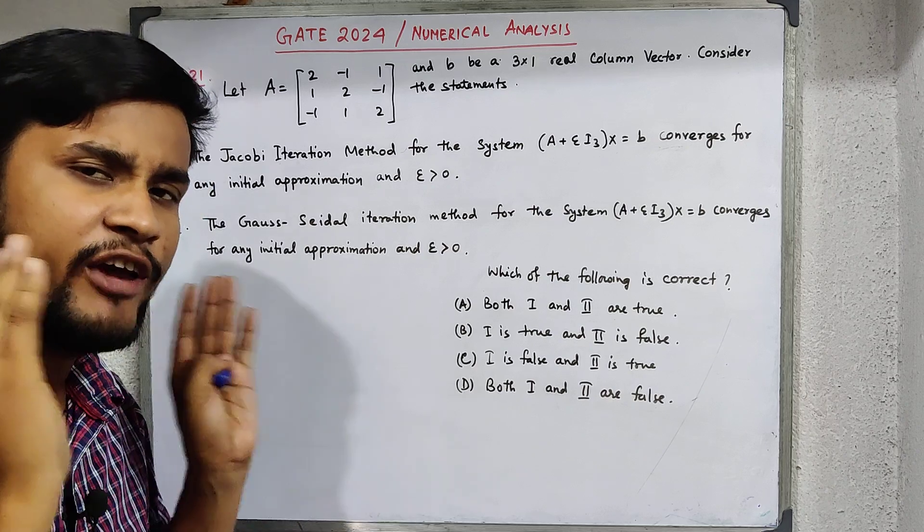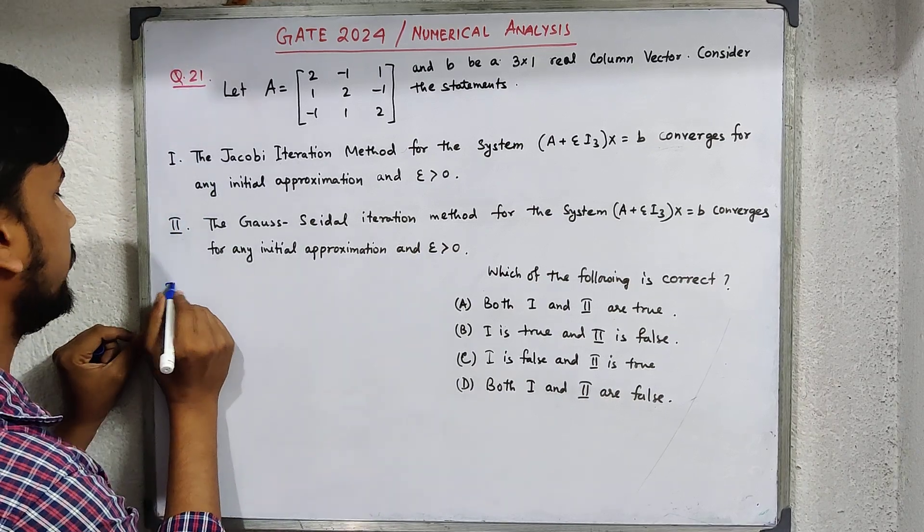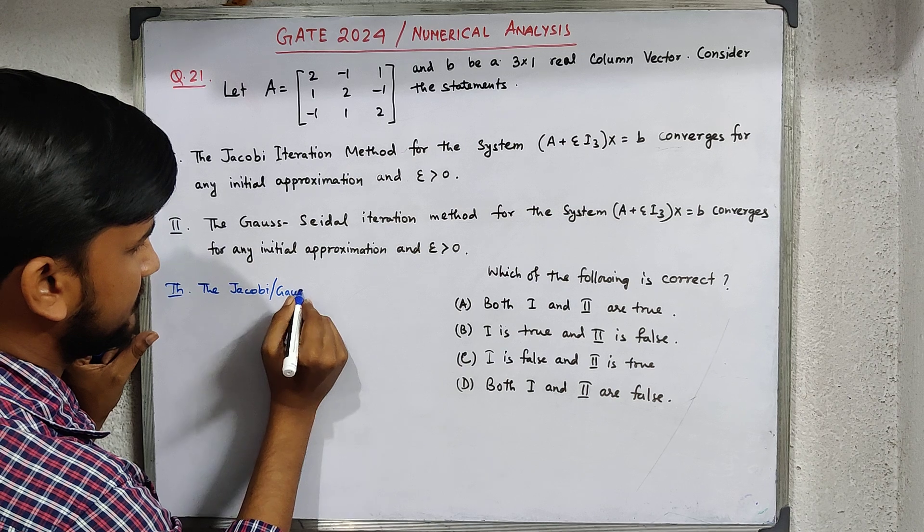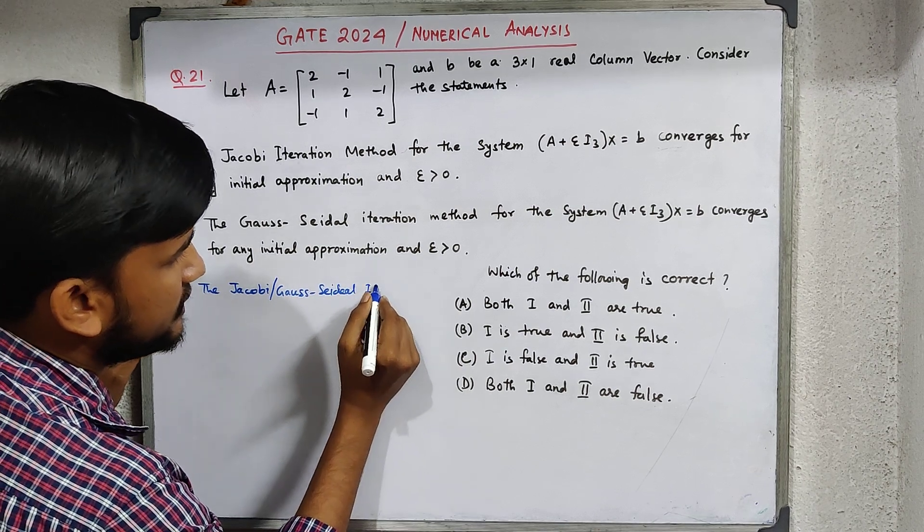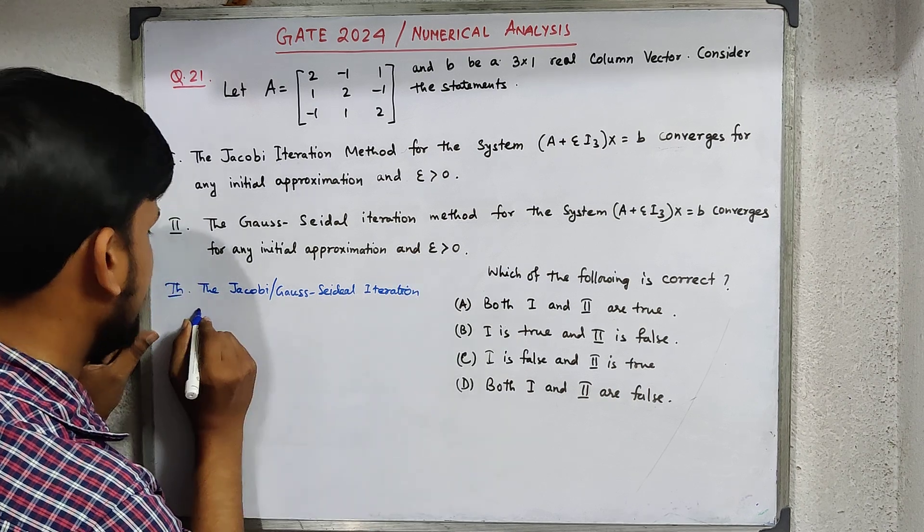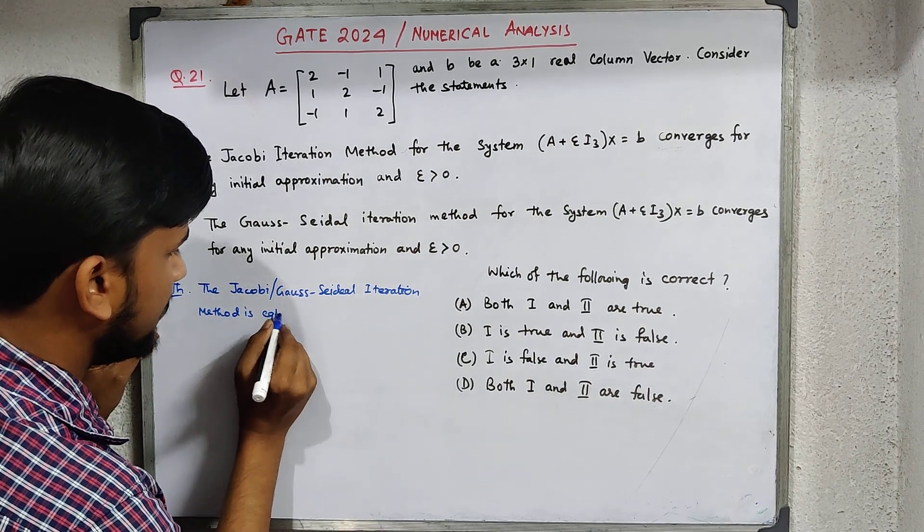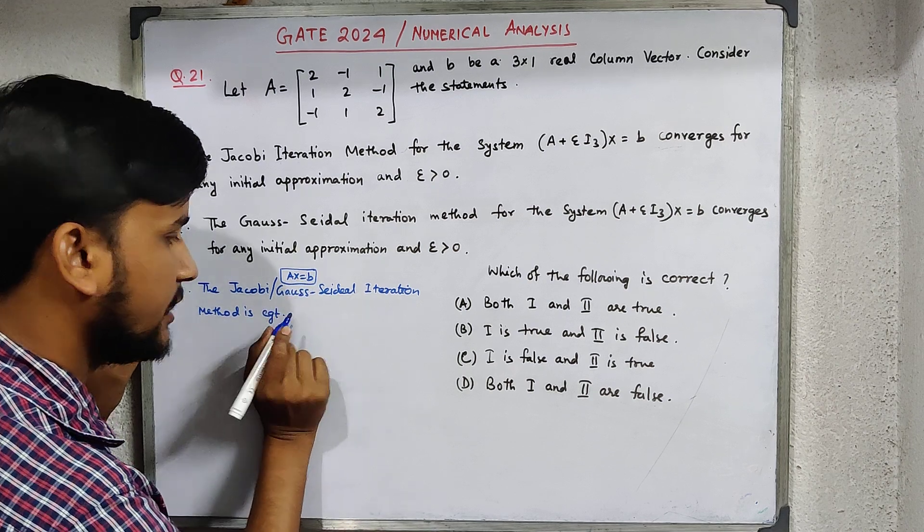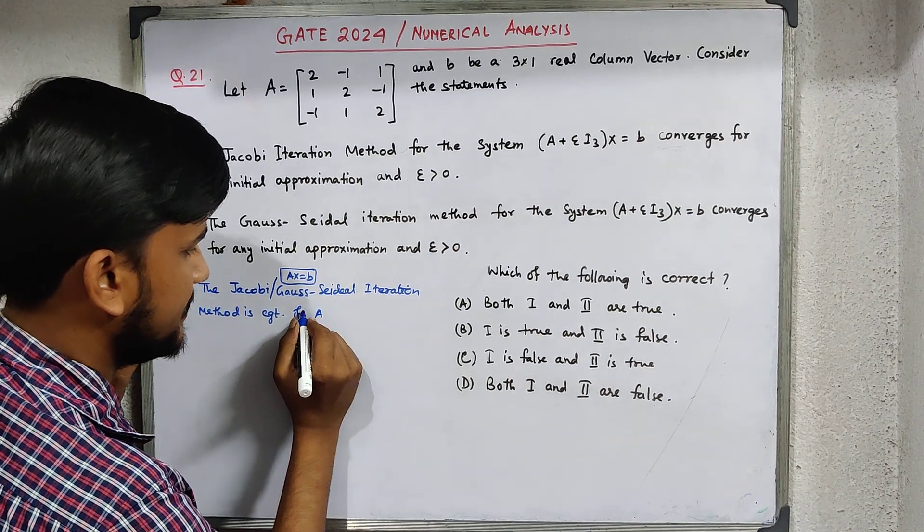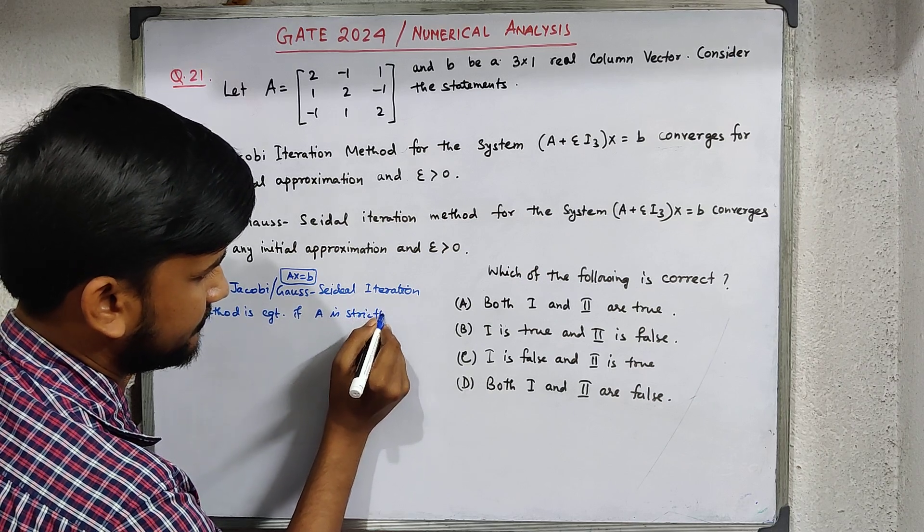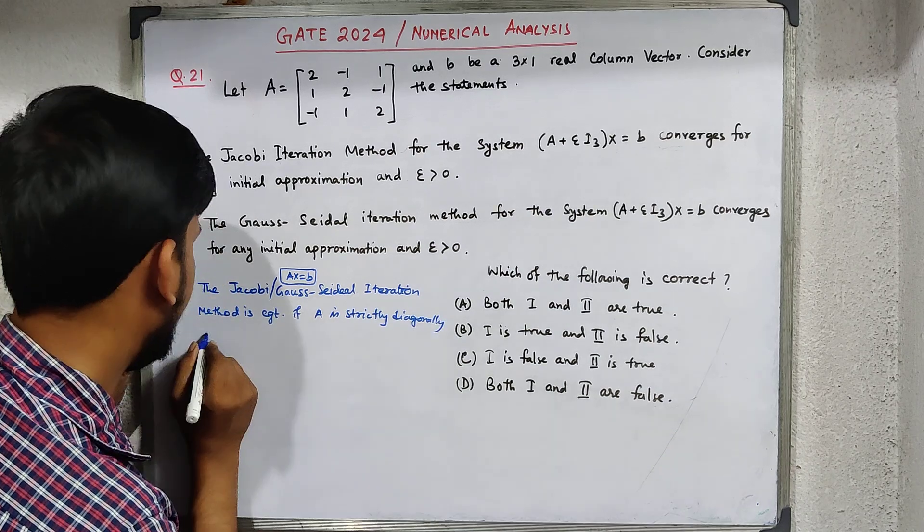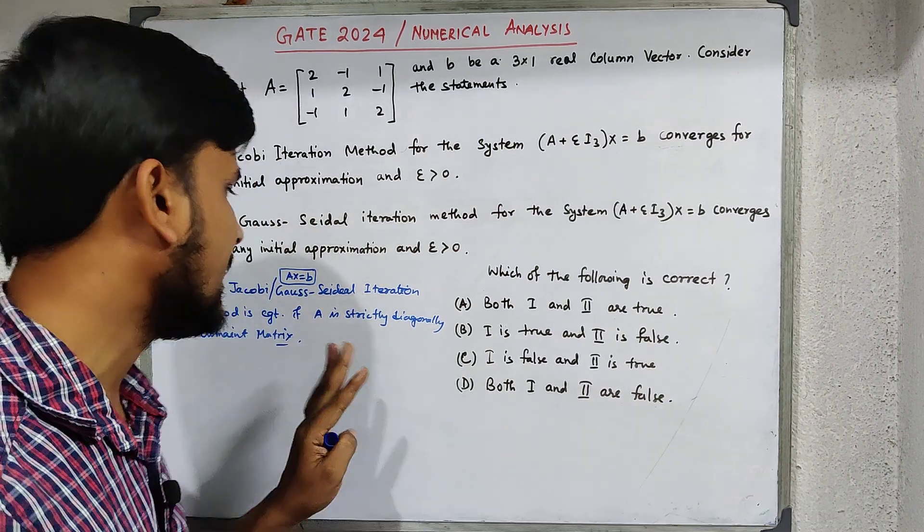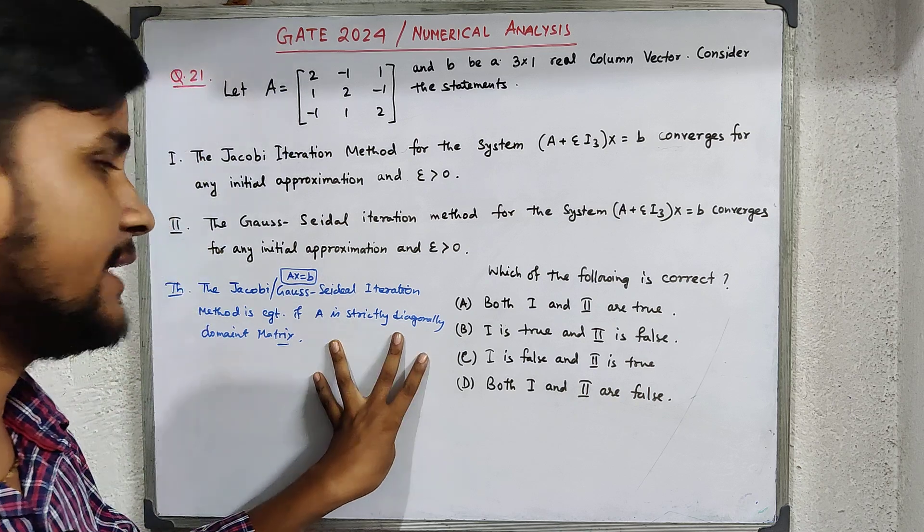This is a very easy problem if you know which theorem to use. The Jacobi or Gauss-Seidel iteration method is convergent if the system Ax=b converges and if A is a strictly diagonally-dominant matrix.